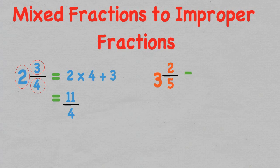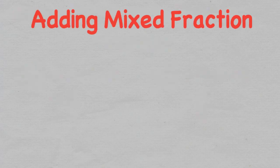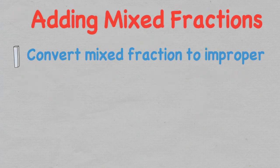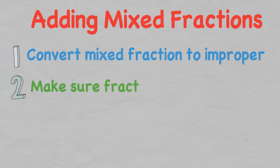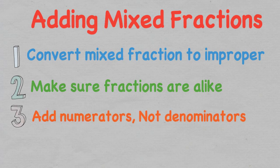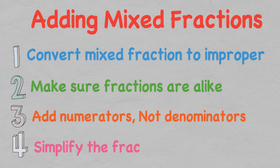Let's look at one more example. If we have three and two over five, we multiply the whole number three by the denominator five, and add the numerator two. This leaves us with 17 over five. So the four steps to solving a mixed fraction are: one, convert the mixed fraction into an improper fraction; two, make sure the fractions are alike; three, add the numerators together but not the denominators; and four, simplify the fraction if possible.